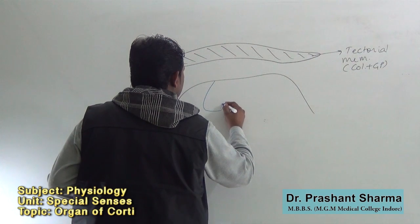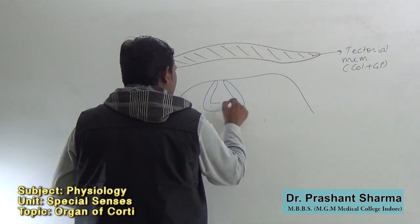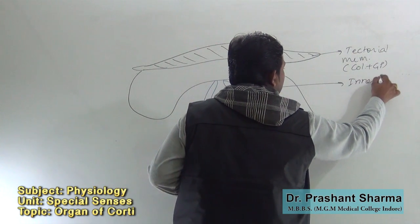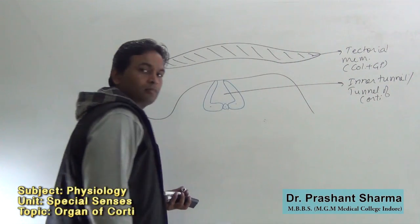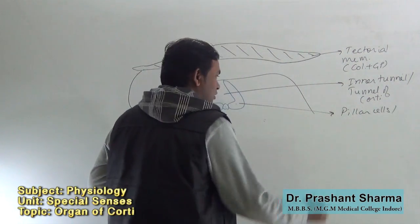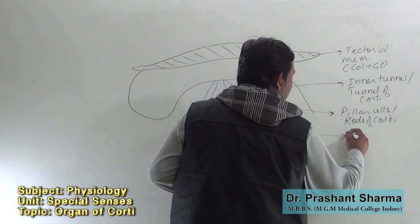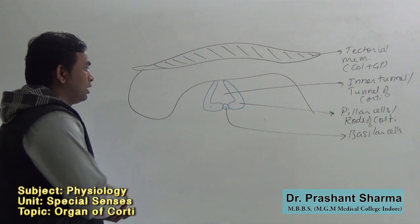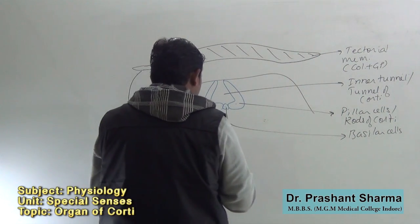A few cells known as pillar cells or rods of Corti are here to enclose a cavity called the inner tunnel or tunnel of Corti. These are pillar cells or rods of Corti. A few basilar cells may be in between. Outer to the pillar cells, or outer to the inner tunnel of Corti, outer phalangeal cells are present.